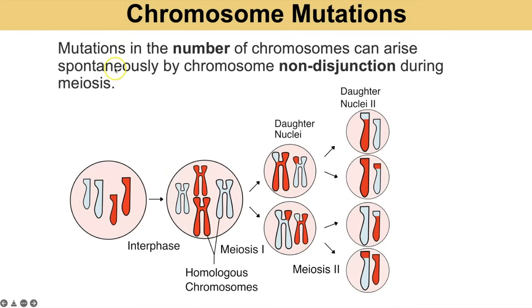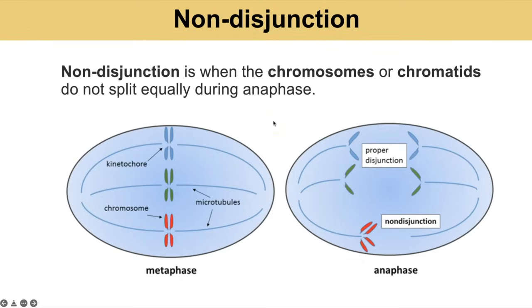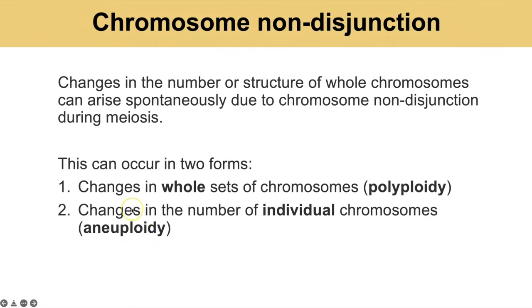Chromosome mutations are changes in the number of chromosomes, and they spontaneously occur during meiosis in a process called non-disjunction. Non-disjunction is when the chromosomes or chromatids do not equally split during anaphase of either meiosis 1 or meiosis 2. This can occur in two forms: a change in the whole set of chromosomes, called polyploidy, or changes in the number of individual chromosomes, called aneuploidy.